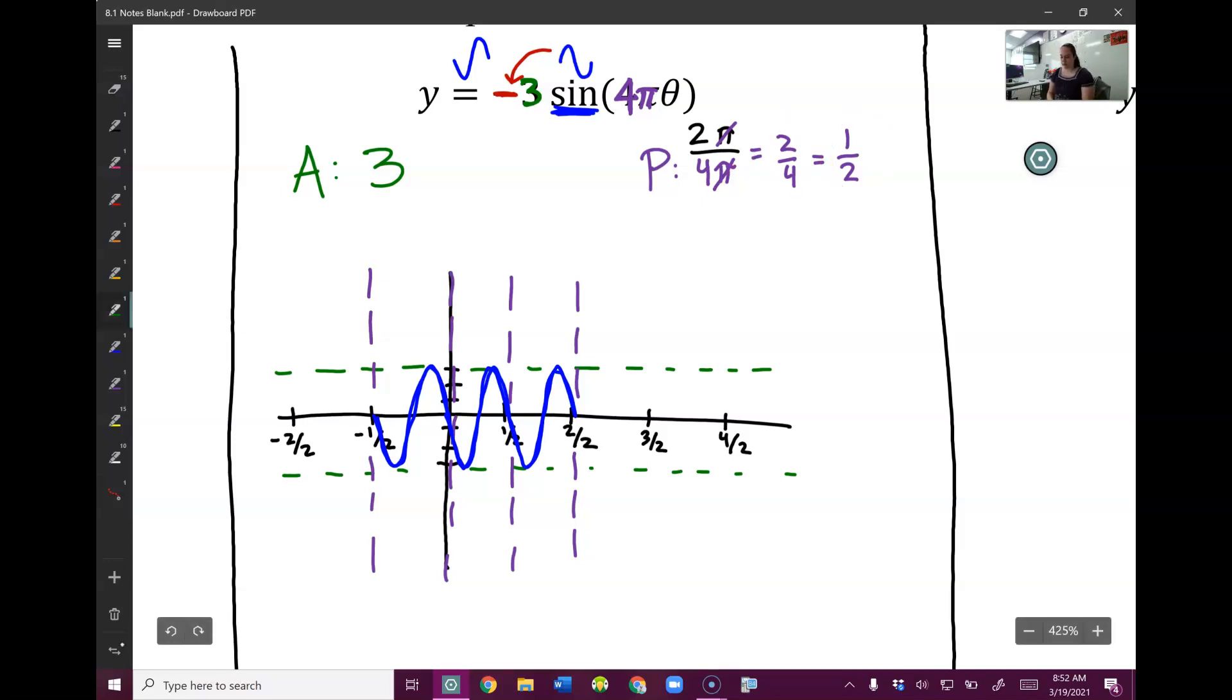So for my amplitude, I go up 3. Down 3 to do my amplitude lines. For my period, I want all my periods to be 1 half wide. So I've got 1 half, 2 halves, 3 halves, 4 halves. And then I also have the other direction. Negative 1 half, negative 2 halves.